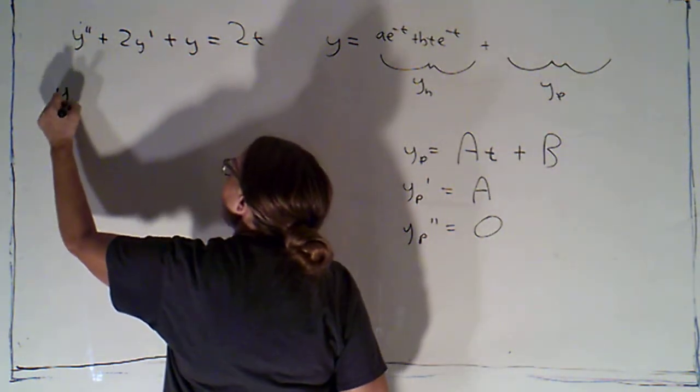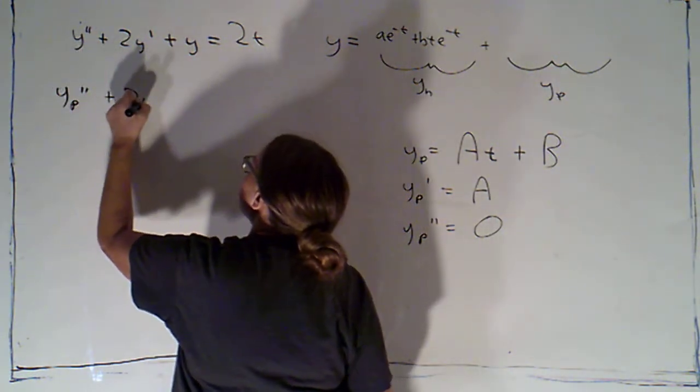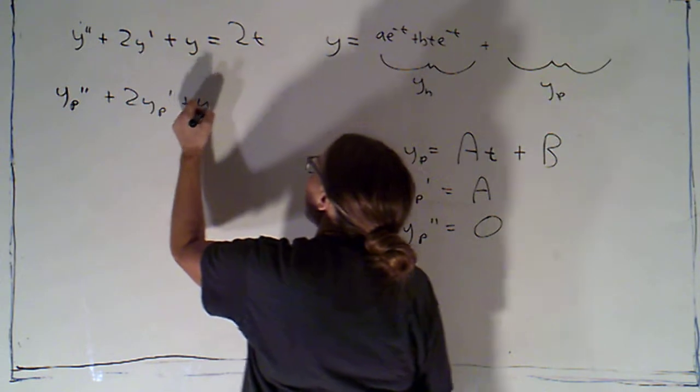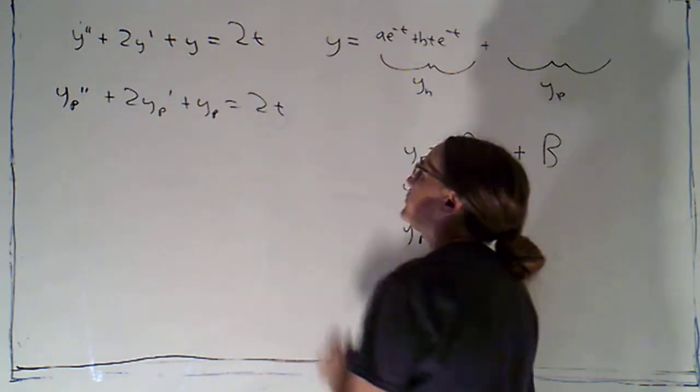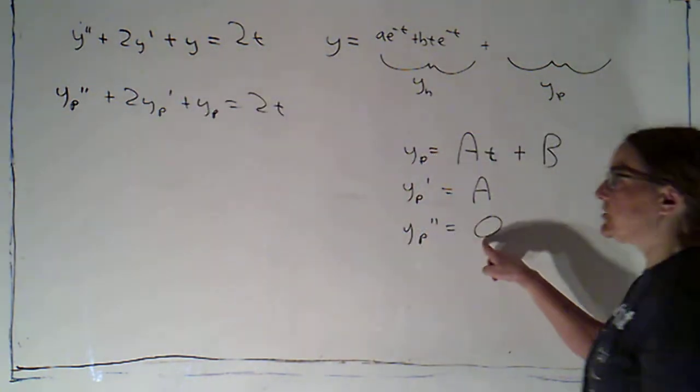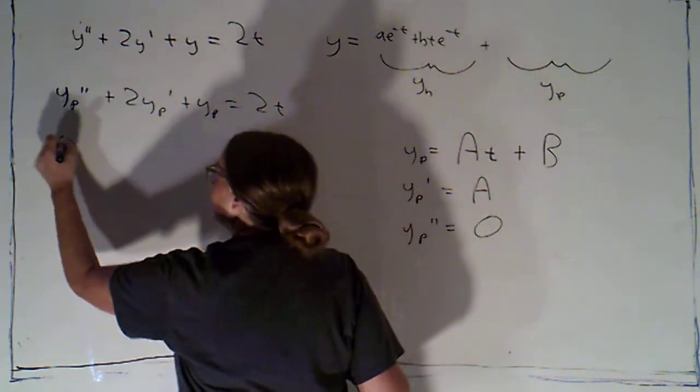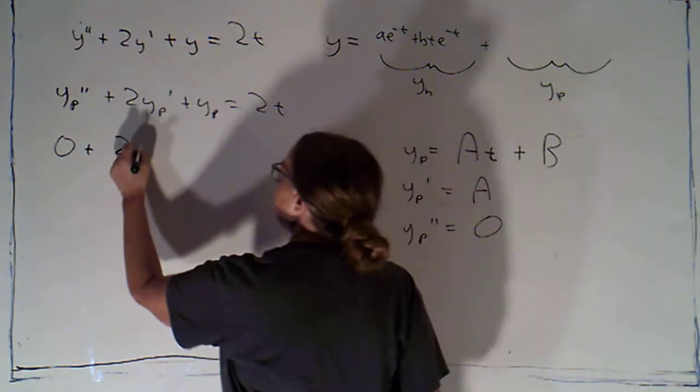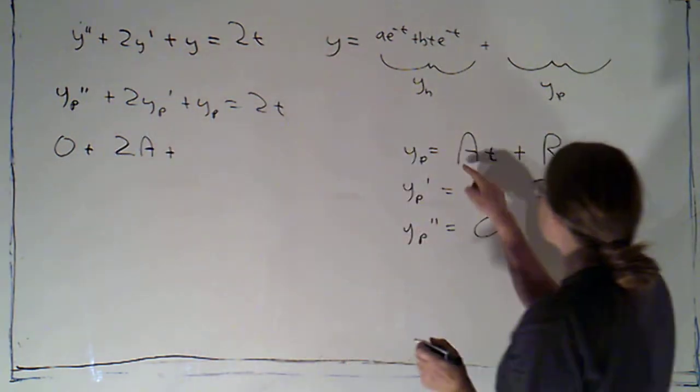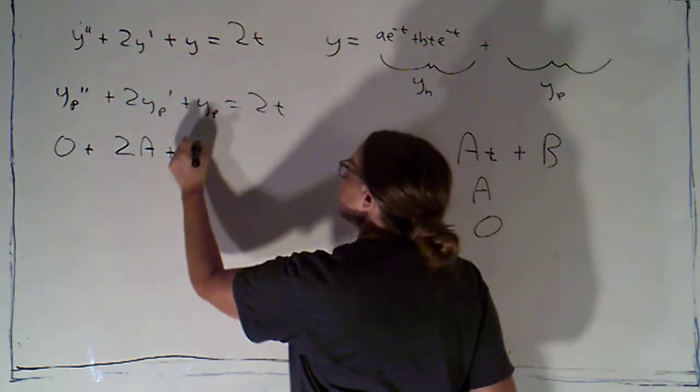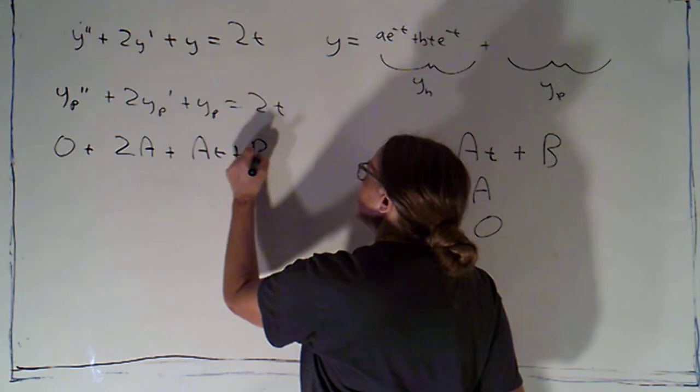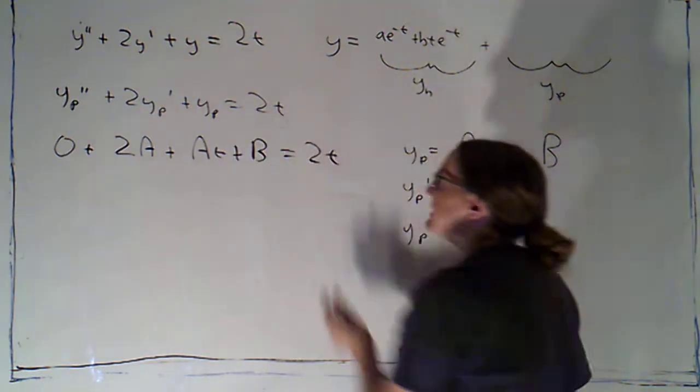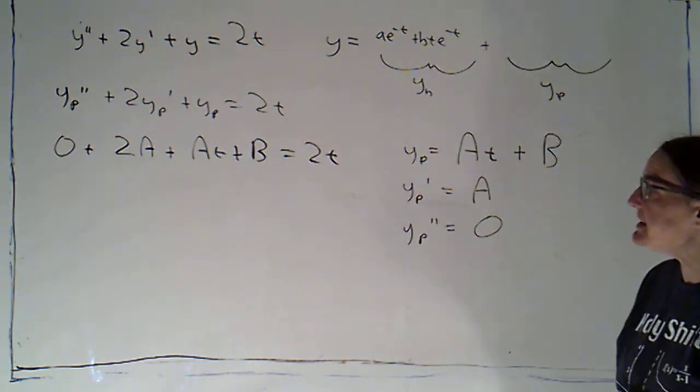So if I plug in yp, I get yp double prime plus 2yp prime plus yp. I want that to equal 2t. The second derivative was just zero, plus two copies of the first derivative was just a, plus the original function was at plus b. And I need that to equal 2t. Okay.